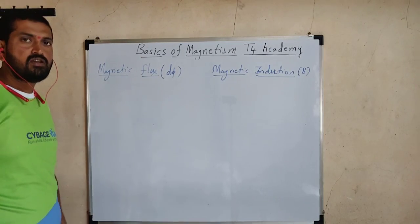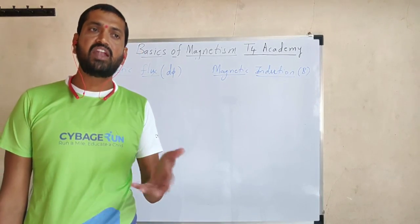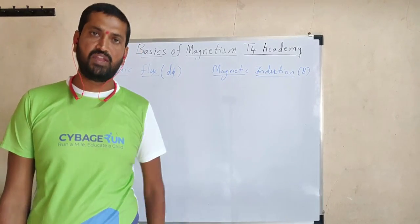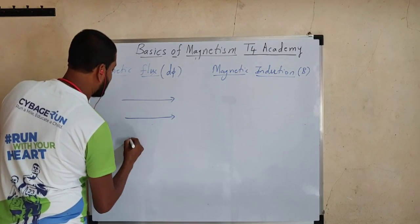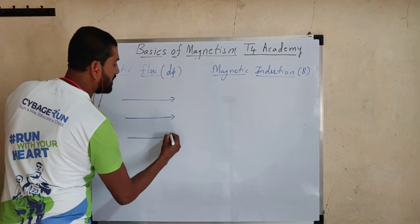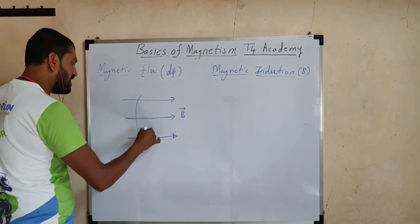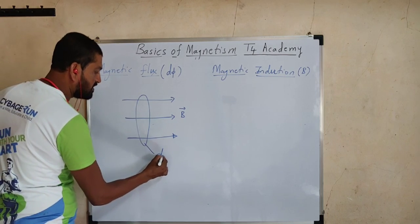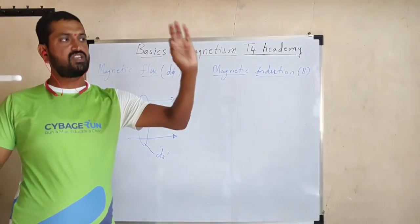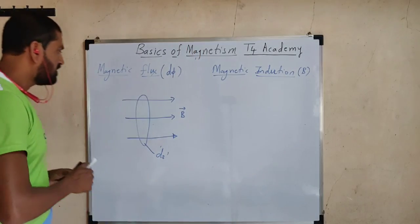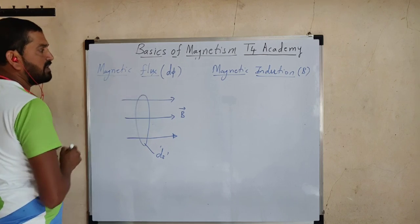Magnetic flux is a scalar physical quantity which gives us an idea about how much magnetic field is linked with a given area. Imagine there is a uniform magnetic field represented with straight, equidistant magnetic field lines. Suppose this is of induction B. If we consider a small area dS inside this magnetic field, normally placed perpendicular to the field, then how much magnetic field is linked with this area is explained in terms of magnetic flux.